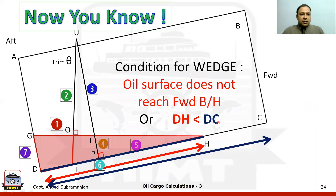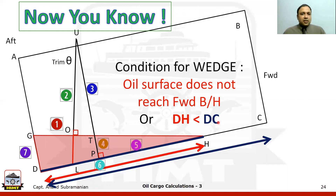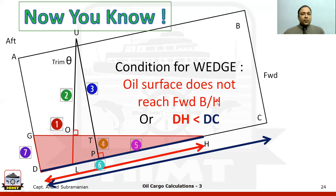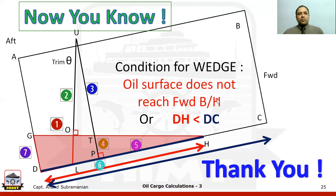So this is all about the wedge calculations. The conditions for the wedge: the oil surface does not reach the forward bulkhead, and DH is less than DC. You should now be confident in opening examination papers and solving those questions. There are many publications available covering wedge calculations, some solved and some as exercises. With this knowledge, you should be able to attempt the MMD papers. Thank you very much for watching, and all the best for your examination.